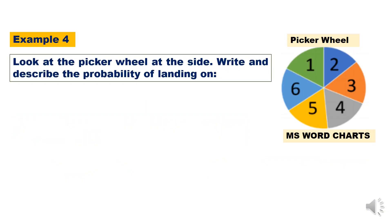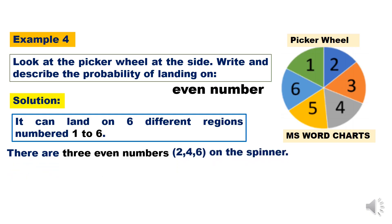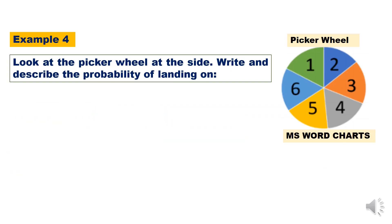Write and describe the probability of landing on an even number. There are 3 even numbers: 2, 4, and 6 on the spinner. So the probability of landing on one of these numbers is 3 over 6. Therefore, we can describe the probability as equally likely as unlikely.